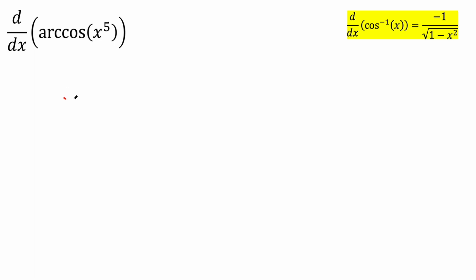We're still going to keep this negative one divided by the square root. We're still going to keep the one minus. Instead of saying x squared, because x is right here that's how you get x squared, in our case it's x raised to five. So instead I'm going to put x raised to five closed parentheses raised to two.